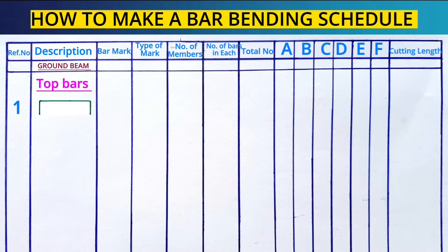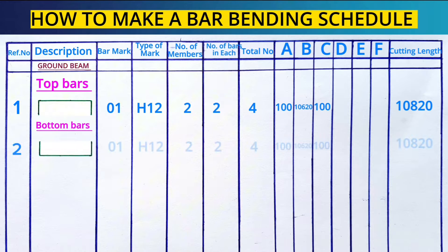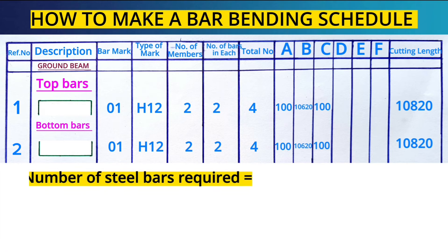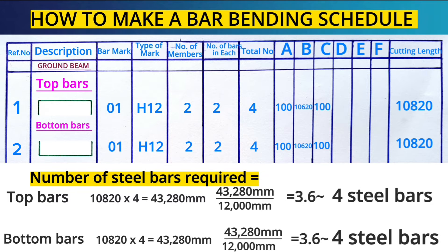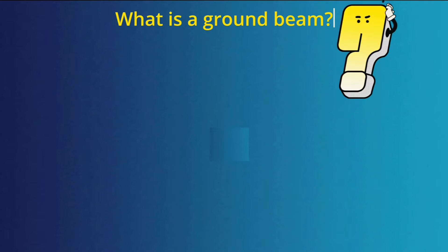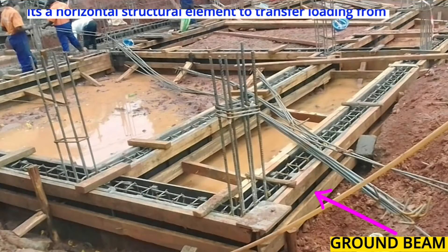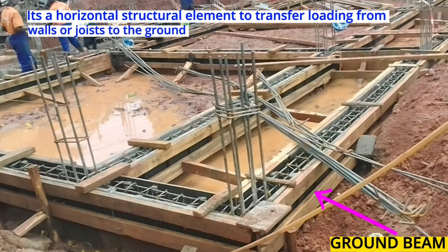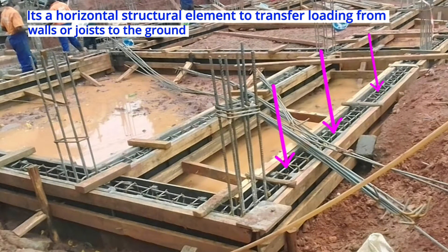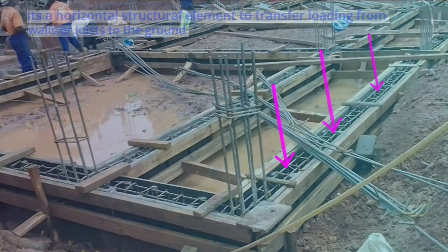You are going to learn the easiest way to prepare a bar bending schedule for the ground beam and also how to determine the number of steel bars required for the ground beam. Let's first clearly understand what a ground beam means. This is a ground beam — it's a horizontal structural element to transfer loading from building walls or joists to the ground.